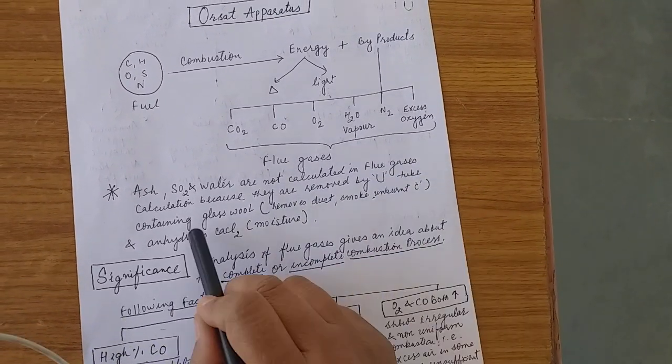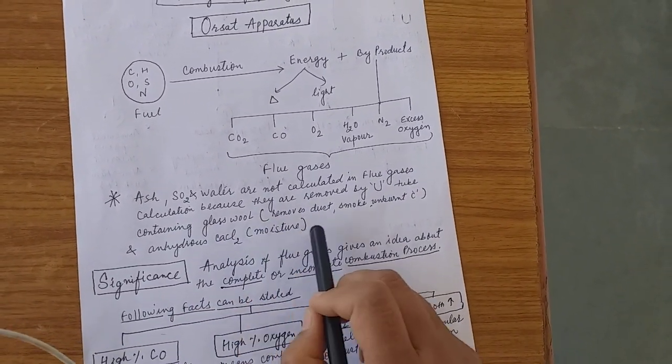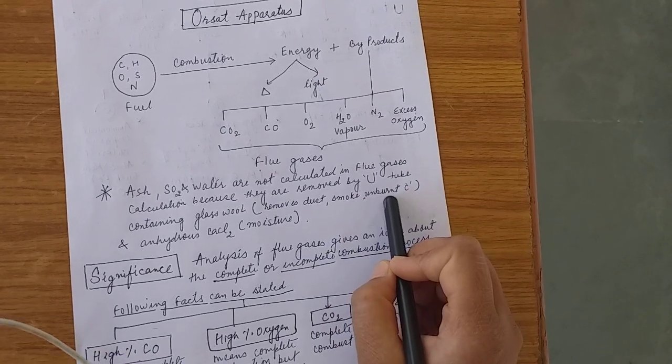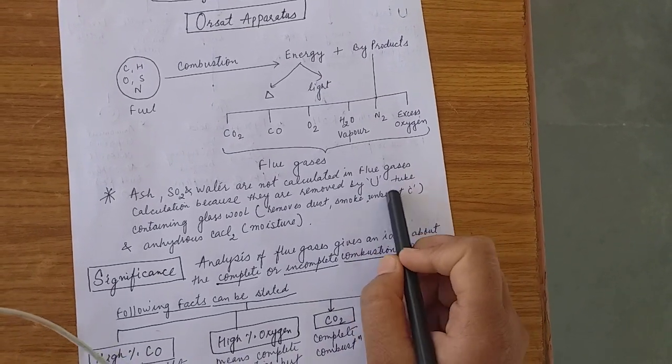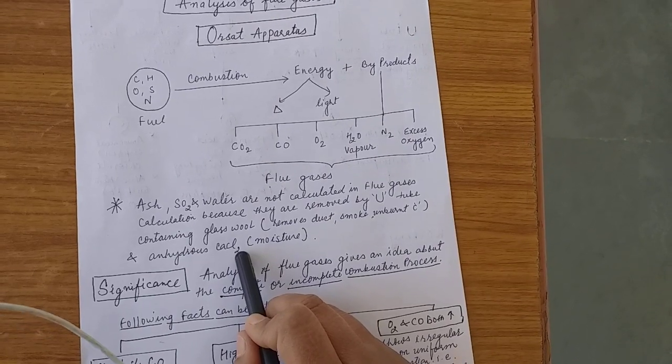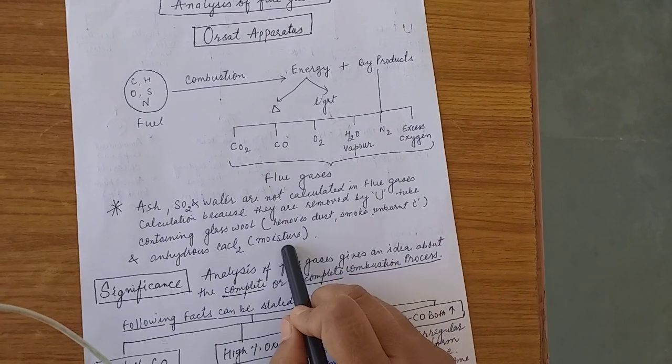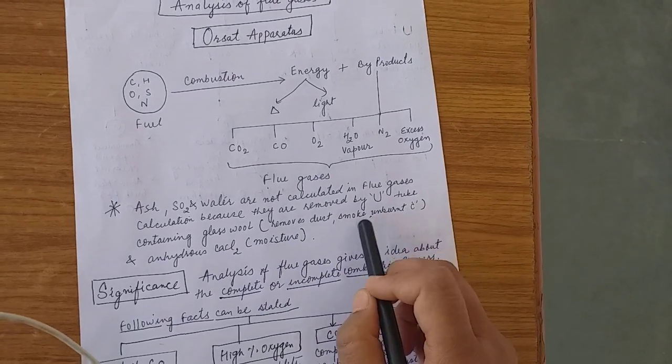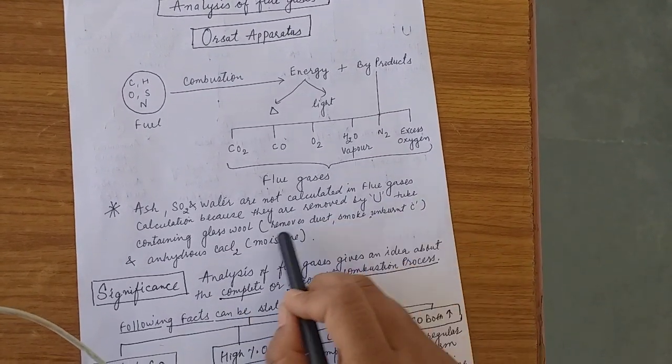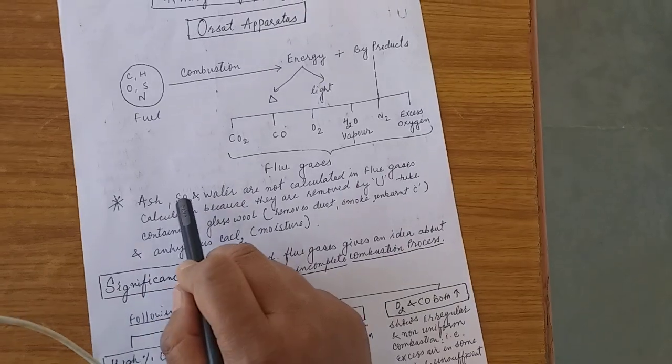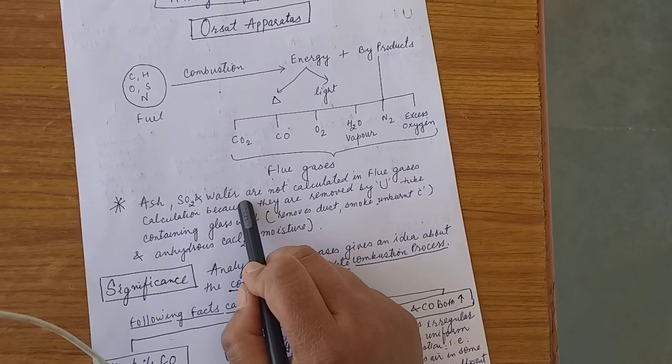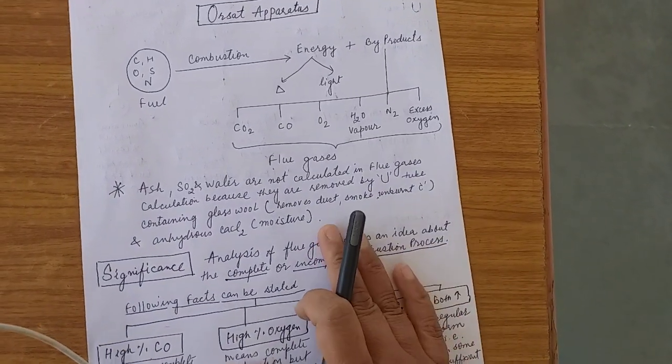It contains this U-tube containing glass wool which removes the dust, smoke, and unburned carbon particles. U-tube is also containing anhydrous CaCl2, calcium chloride, which removes the moisture. Therefore, moisture, smoke, dust particles, and unburned carbon particles are removed here. Therefore, ash, sulfur dioxide, and water are not calculated in flue gases calculations.